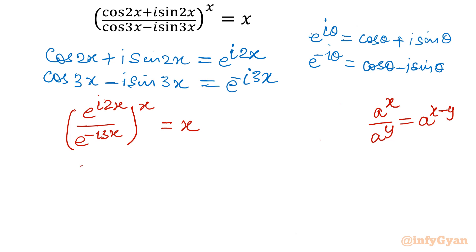I can write e raised to the power i 2x plus i 3x whole power x equal to x. It will become e raised to the power i 5x whole power x equal to x. By the property of exponentiation, a power b whole power c can be written as a power b times c.